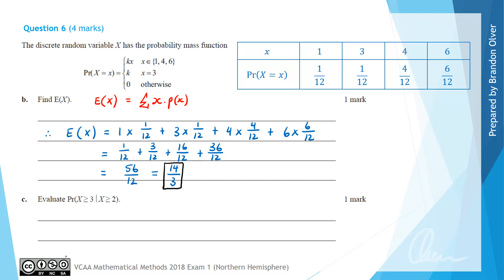So for part C, we're asked to evaluate the probability that x is greater than or equal to 3. So x is greater than or equal to 3 is all of this, given that x is greater than or equal to 2. But being greater than or equal to 2 in this distribution is simply being 3, 4, or 6 as well.